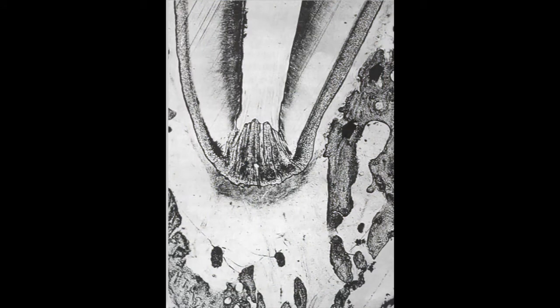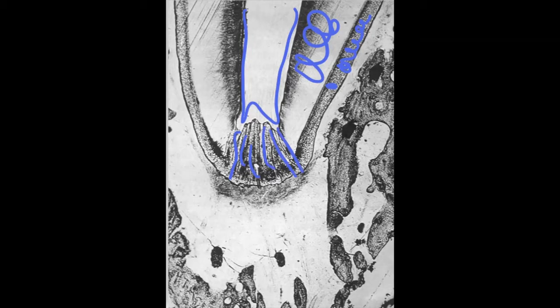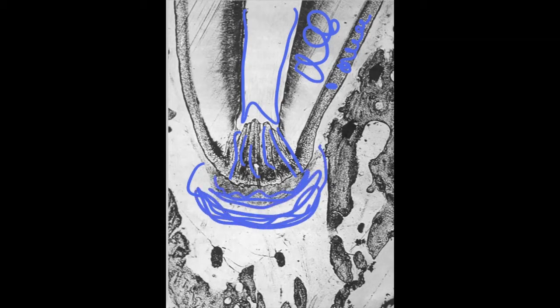Here's another photomicrograph of a root tip showing the apical delta. We can see the cementum covering the root, the dentin inside, the pulp chamber, and the tiny channels of the apical delta. In this particular instance there was inflammation around the root tip because of infection leaking out through the apical delta into the space between the root and the bone.